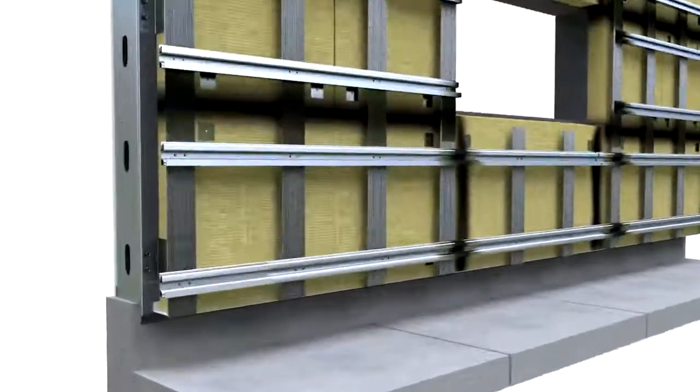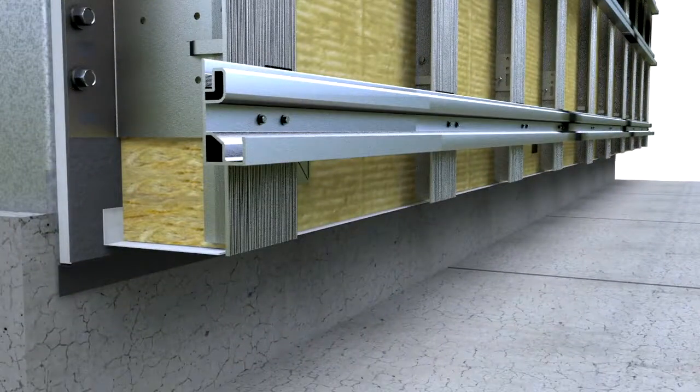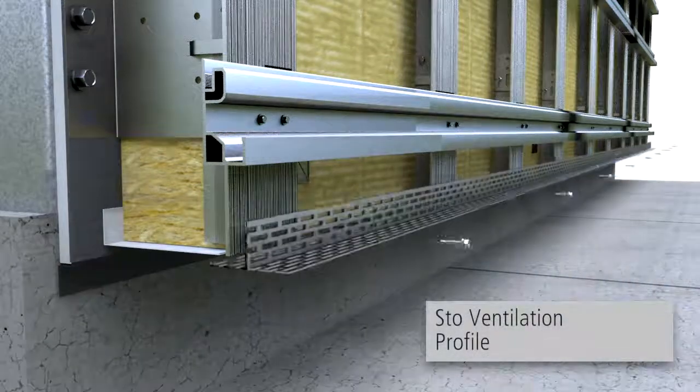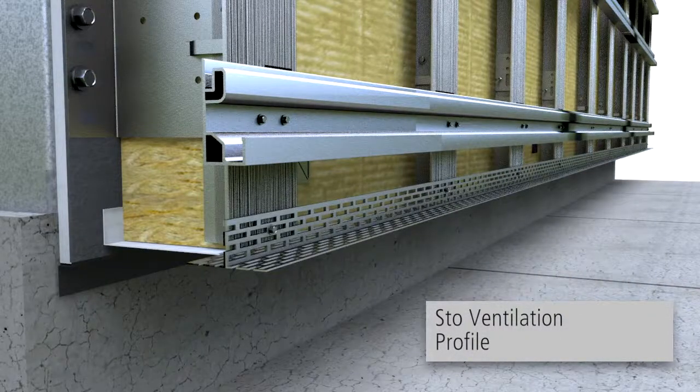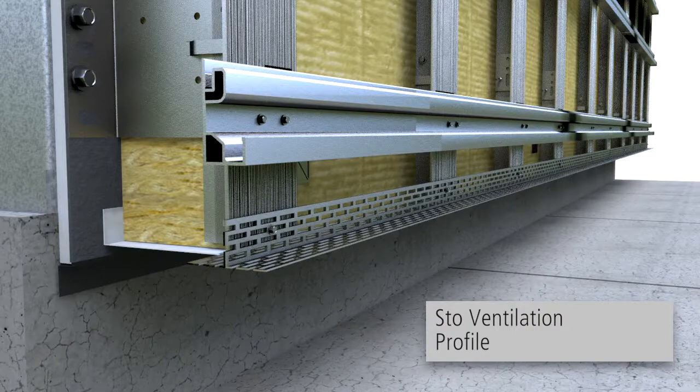At the ground level, windows, balconies, patios, ceilings and roof surfaces, a ventilation profile may be used to prevent pests and debris buildup within the ventilation cavity.